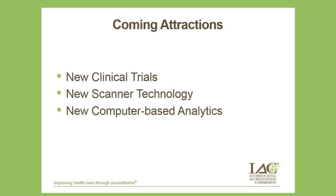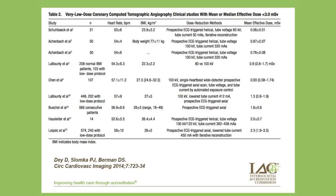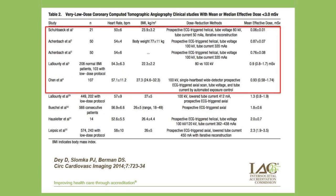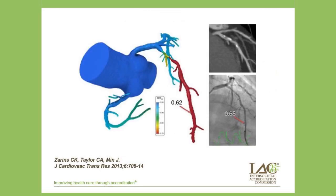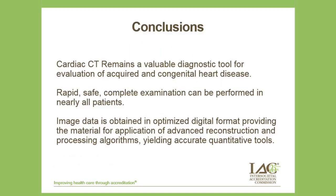Looking toward the future, very low-dose CT scanning results now show radiation doses effectively less than that of a chest film. Additionally, work from Jim Min's group in New York demonstrates calculation of coronary flow reserve in the LAD using intensive computer analysis of image acquisition data, providing physiologic correlation with the morphologic detection of luminal narrowing. To conclude, cardiac CT is a fast, safe, and accurate means of investigating acquired and congenital heart disease in adults and children. It produces image data which can be reprocessed to provide visual and quantitative information essential for modern cardiac patient management.